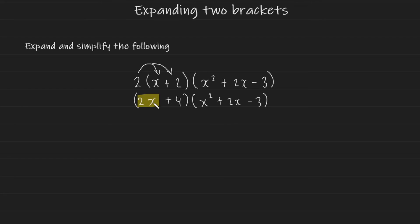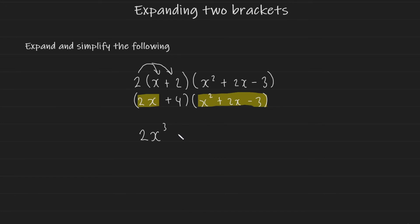Take your first term from the first bracket and multiply that onto all terms of the second bracket. So we're going to have 2x multiplied by x squared, which gives us 2x to the power of 3. And then we're going to have 2x multiplied by plus 2x, which is going to give us plus 4x squared. And then finally, 2x multiplied by negative 3, which is going to give us minus 6x.